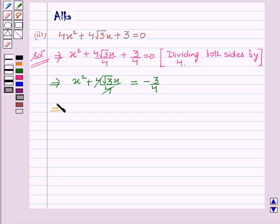This can be written as x square plus 2 root 3 by 2x plus root 3 by 2 whole square equal to minus 3 by 4 plus root 3 by 2 whole square. We have added root 3 by 2 whole square on both the sides.